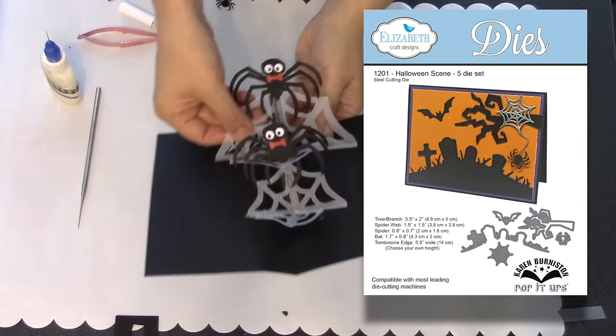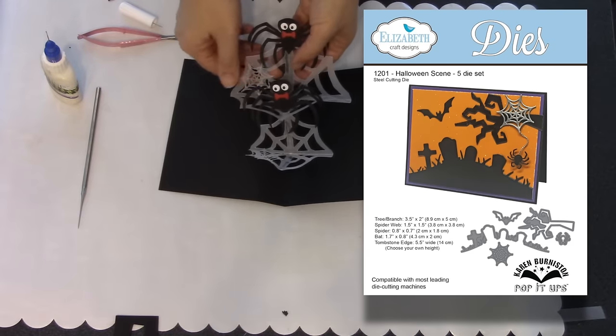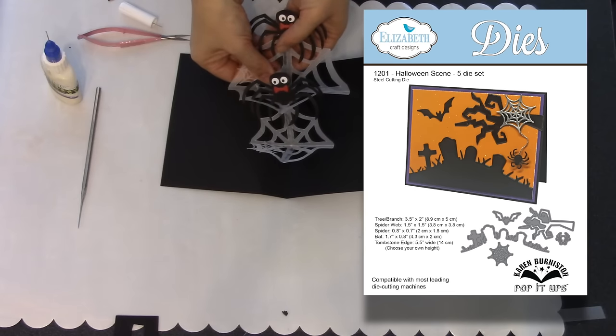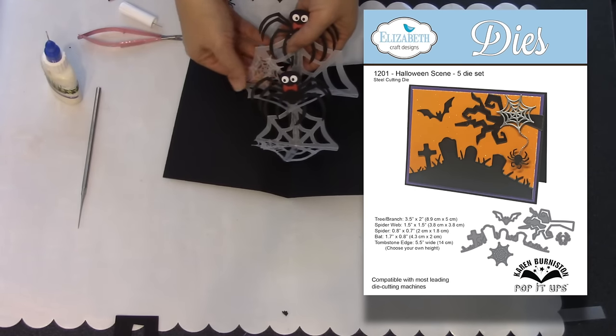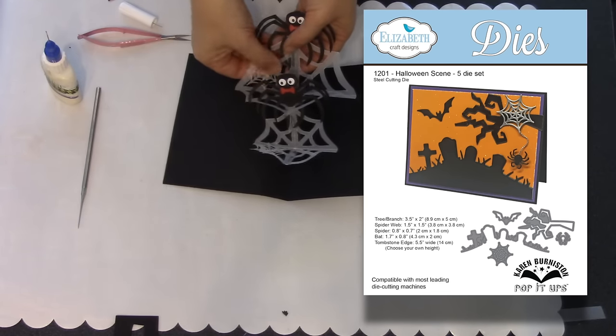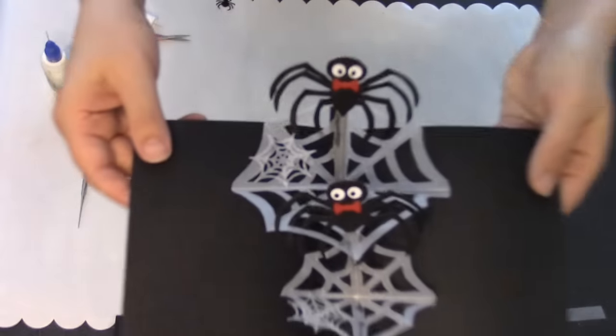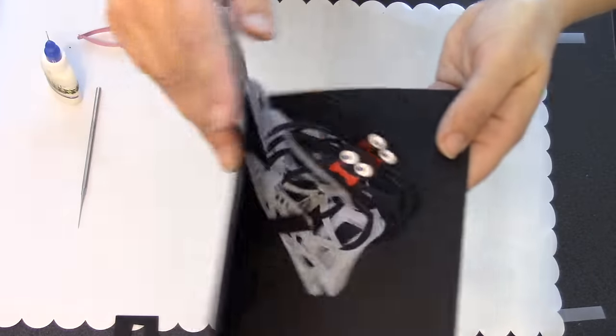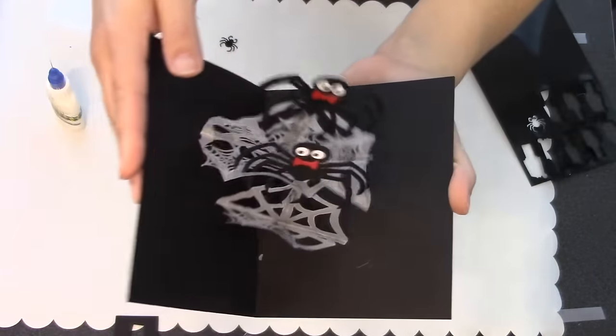Now I can basically just have fun decorating. I'm going to use the Halloween scene die. This is a great accessory die from my collection. It has a spider web and a spider. I've cut several of the webs out of vellum and I'm attaching those to the big webs.